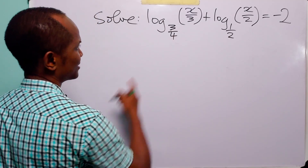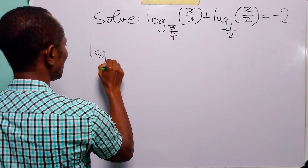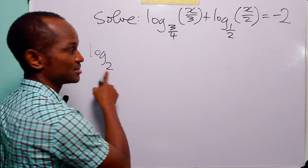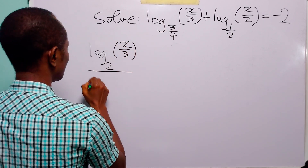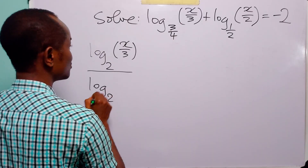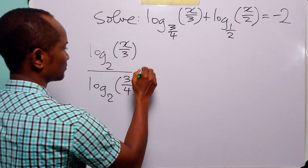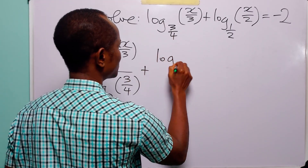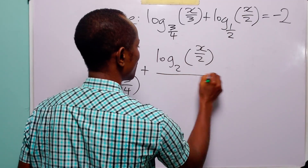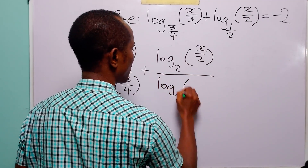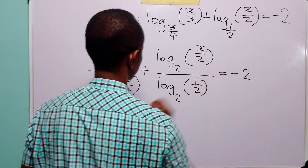Applying the change of base formula to these two log terms on the left, we have log base 2 of x over 3, divided by log base 2 of the old base which is 3 over 4, plus log base 2 of x over 2, divided by log base 2 of the old base which is 1 over 2, is equal to minus 2.